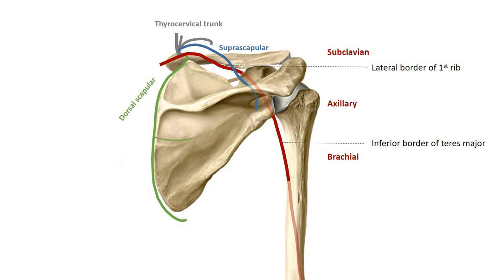We will now look at a branch of the axillary artery. This is the subscapular artery. This branches almost immediately into the circumflex scapular artery and the thoracodorsal artery.